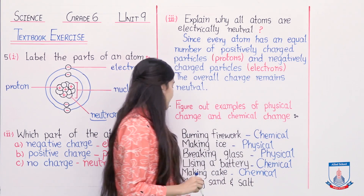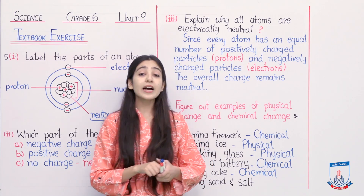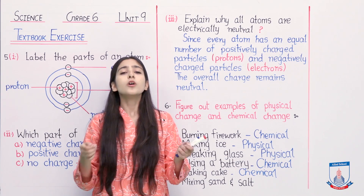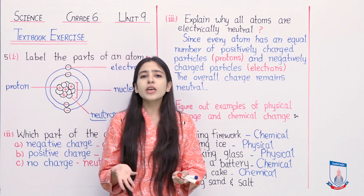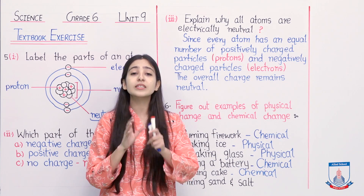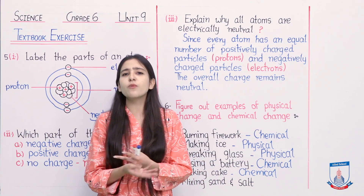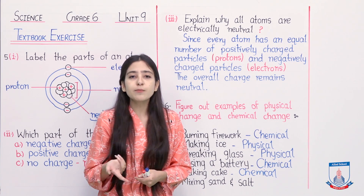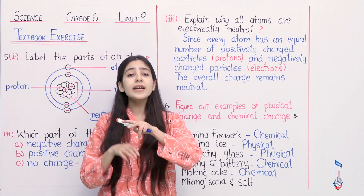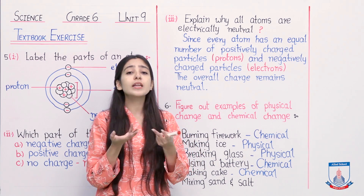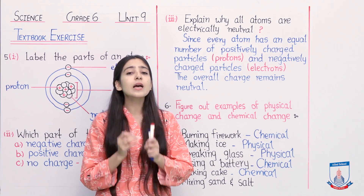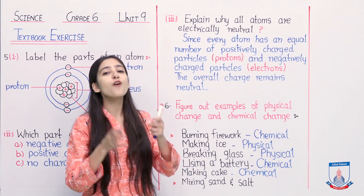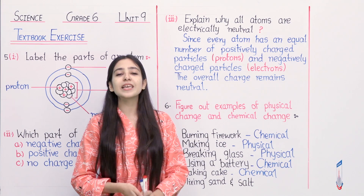The last example is mixing sand and salt. If you take sand in a bowl and take salt in a cup and mix them, there will be no chemical reaction - only sand particles and salt particles will be mixed. If we dissolve them in water, the salt will dissolve and the sand will settle down - the ingredients get separated. They were not chemically combined before. So this is an example of physical change. You will write: physical.